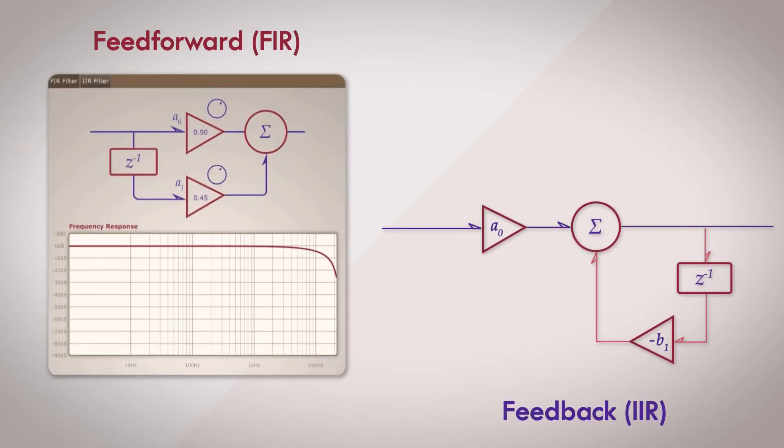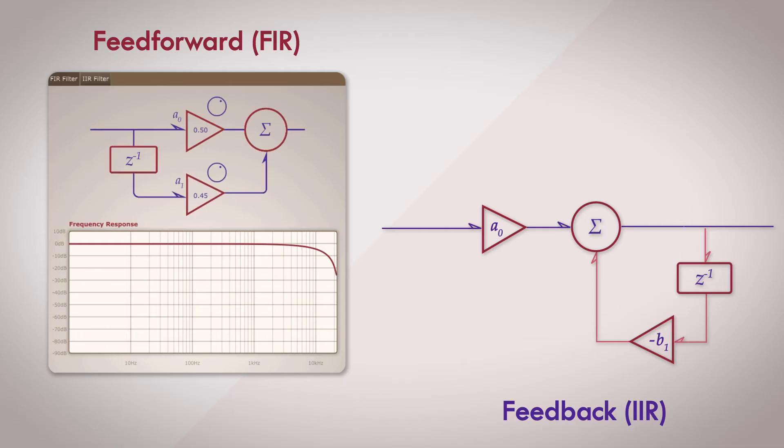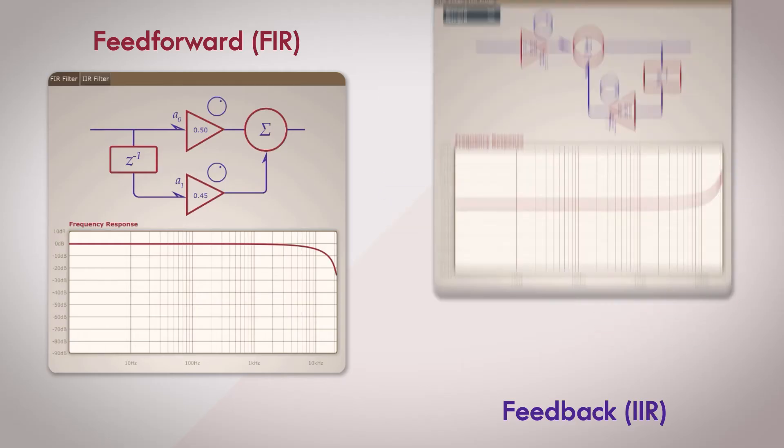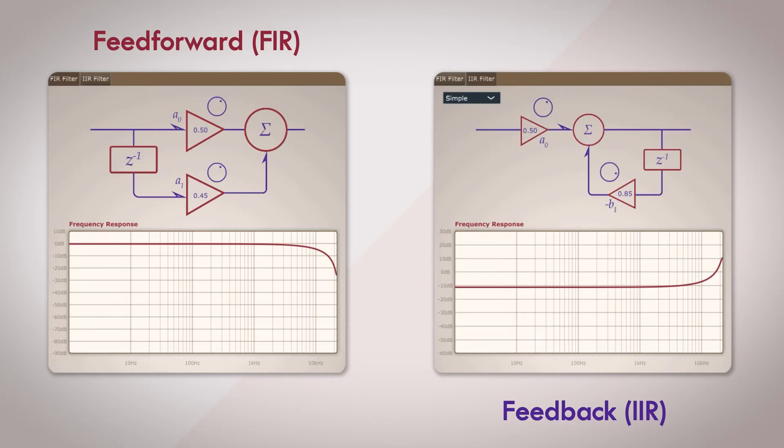Here is the frequency response of a first order FIR filter, and another of a first order IIR filter. Take a moment to pause here and think about what the differences between these two responses are. In the case of the feedforward filter, the Nyquist frequency is tending towards zero. In fact, if the two feedforward coefficients are equal, the Nyquist frequency is driven to zero.